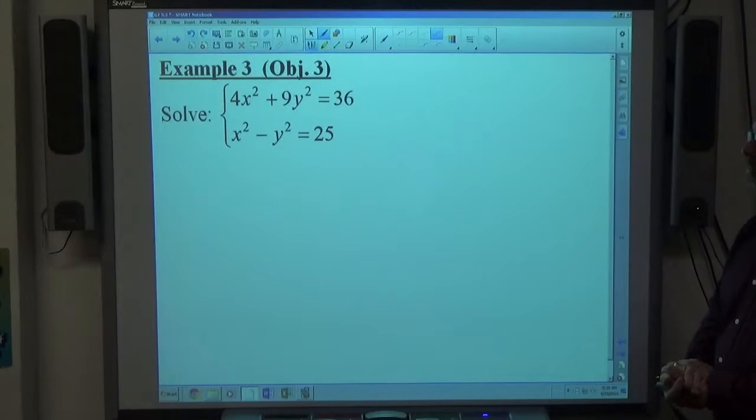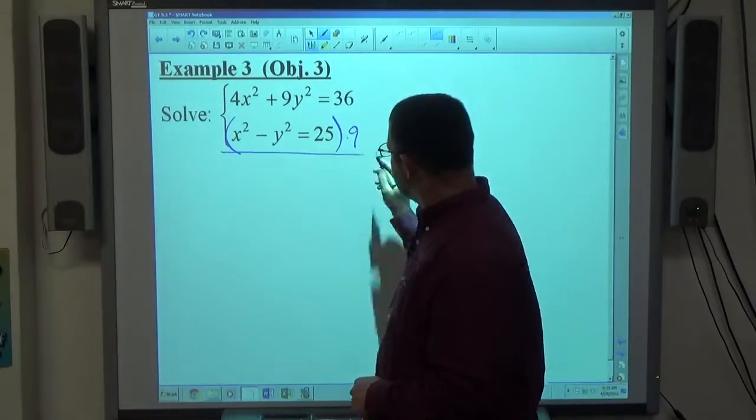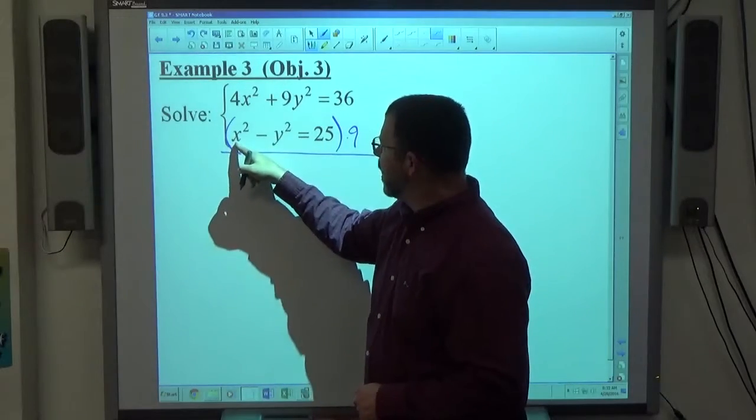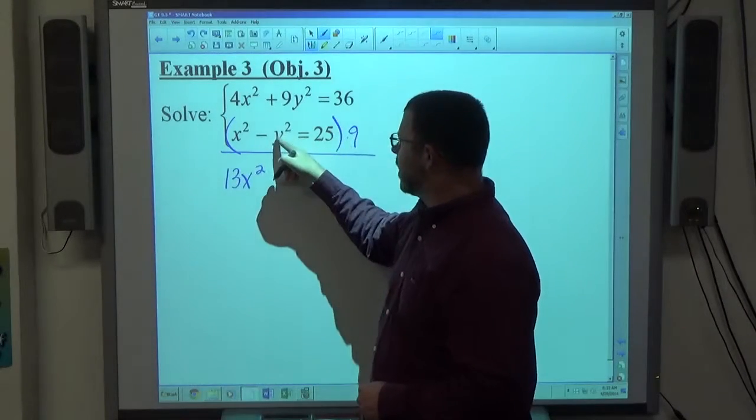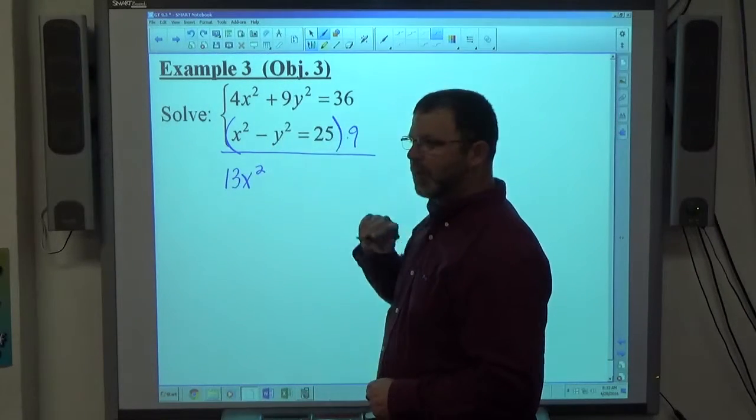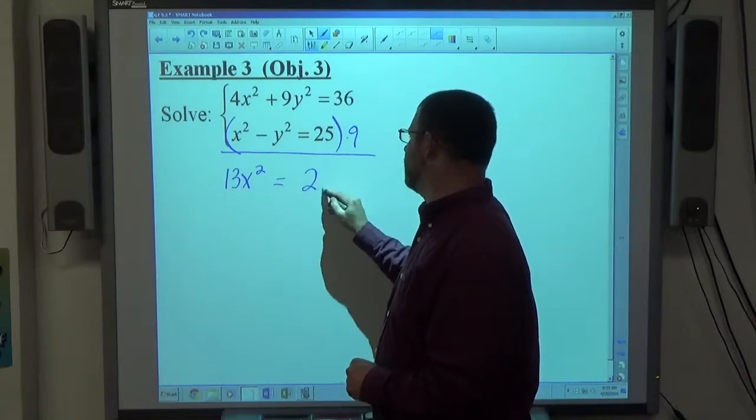Looking at it, elimination looks pretty easy. Multiply the bottom equation by nine. Nine times x squared is 9x squared plus 4x squared makes 13x squared. Nine times negative y squared is negative 9y squared plus 9y squared cancels. Nine times 25 is 225 plus 36 is 261.